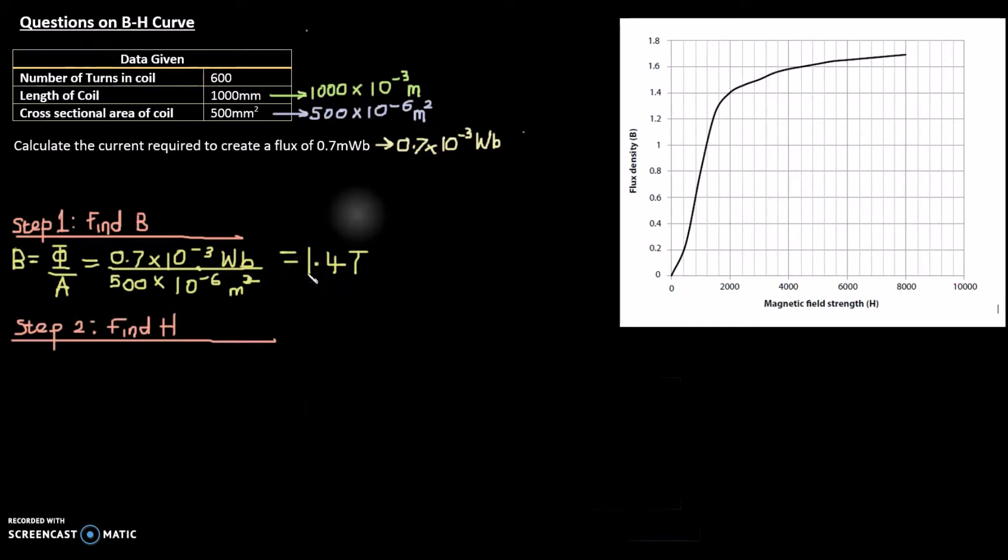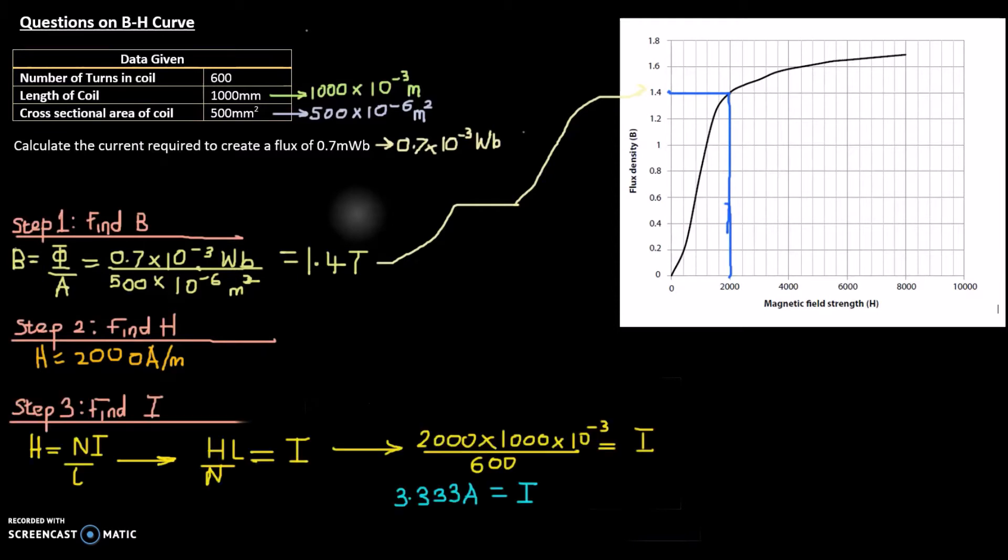The next step is to find the H that corresponds to this B on the graph. On our graph we can see we have 1.4 Tesla for B, and that is about up here, so 1.4 Tesla on the graph, and then we're trying to work out what H corresponds to that, as measured in amperes per meter.